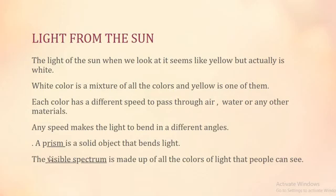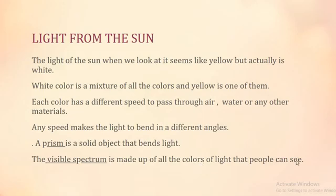We have two definitions here. First is prism. Second is visible spectrum. A prism is a solid object that bends light. The visible spectrum is made up of all the colors of light that people can see.